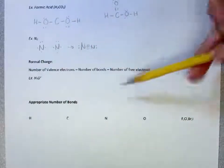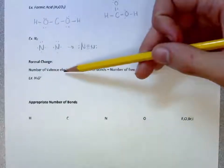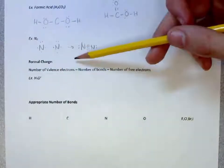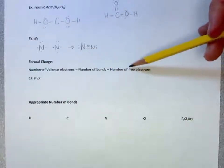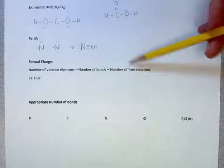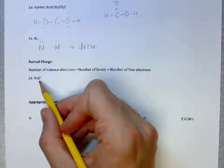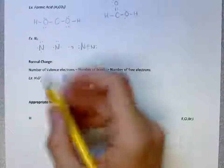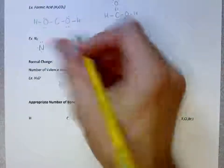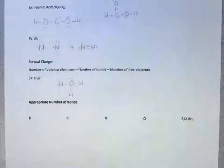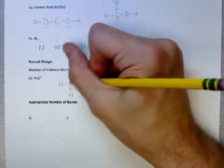With Lewis structures, there also exists something as formal charge. And that's the number of valence electrons, which you can find on the periodic table, minus the number of bonds minus the number of free electrons associated with each atom. We have a hydronium ion. And so, if we draw the structure, this is the hydronium ion.